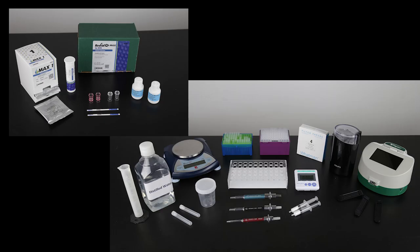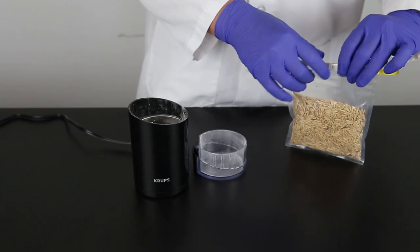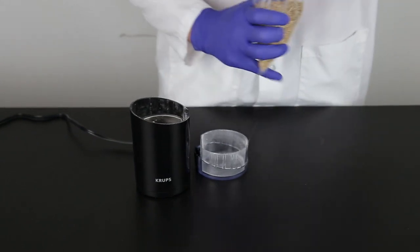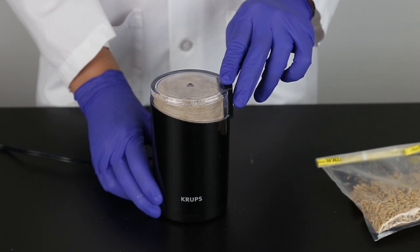To prepare the sample, begin by gathering all the materials required. The sample to be tested should be collected according to accepted sampling techniques. See the FGIS sampling protocol or contact your Neogen representative.